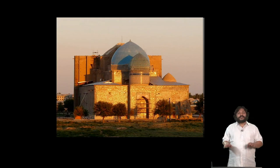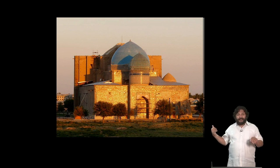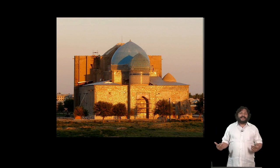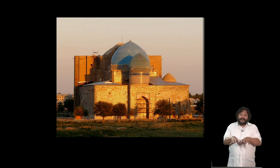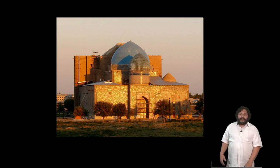The Timurids also build big iwan facades, and these facades contain a completely different structure behind them. So while a building might be simple with a dome on top, from the front it looks a lot more impressive and different — a Potemkinian facade.